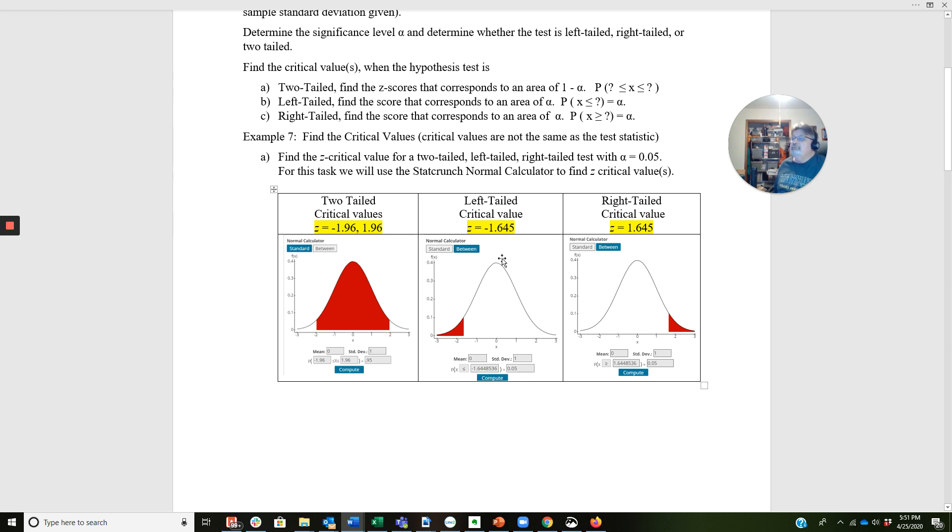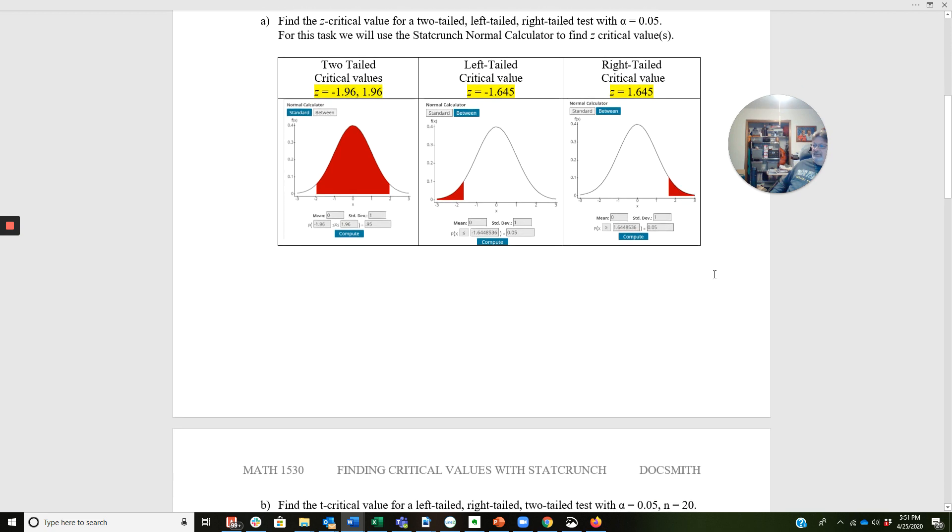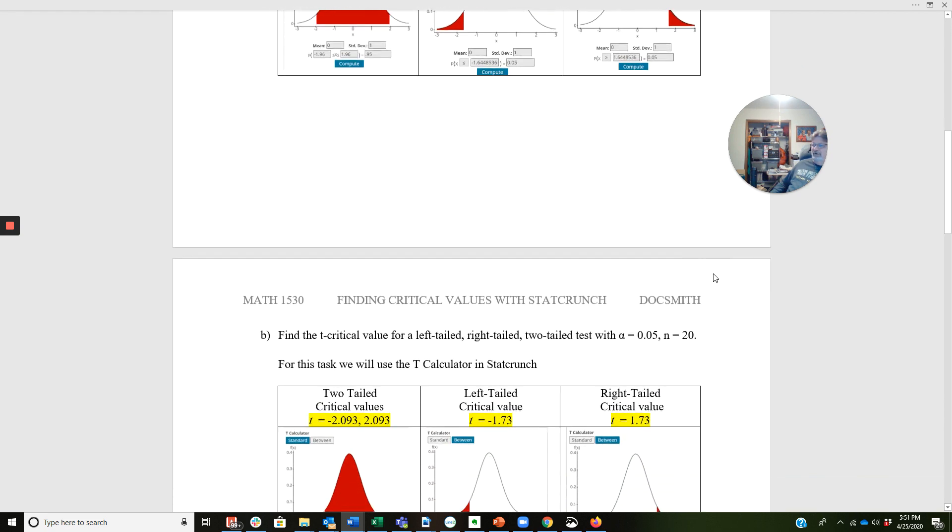When we go to the right-tailed test with the alpha of 0.05, we get what is expected, which is the inverse of this. We're going to put the 0.05, but this time we're looking at the right-tailed, so we've changed the direction of this sign and we get 1.645. That's a review, we did that in Chapter 5 and then again in Chapter 6. Hopefully everybody's okay with that.